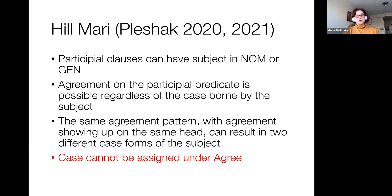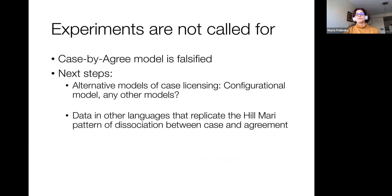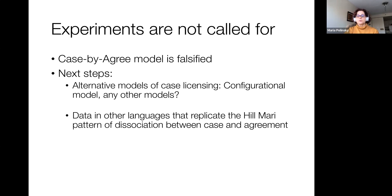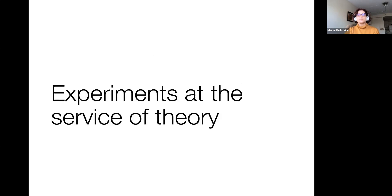Notice we didn't need to run an experiment. She went to the field, interviewed a bunch of speakers, and we have this result which says your model is not right — you have falsified the case-by-Agree model. The next step is: if this model doesn't work, how is case assigned? There is an alternative so-called configurational case model. The important thing is that the case-by-Agree model is not tenable, and we need to look for other languages which could replicate the Hilmari pattern of dissociating case and agreement. Some models can be tested without very complicated experimental machinery.